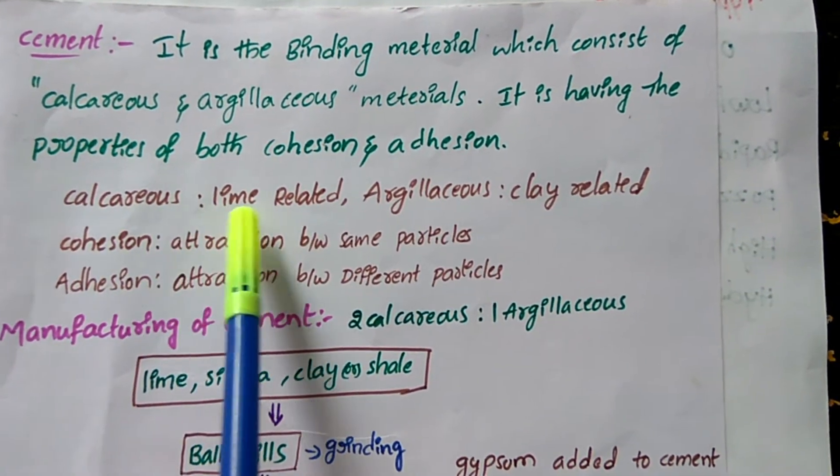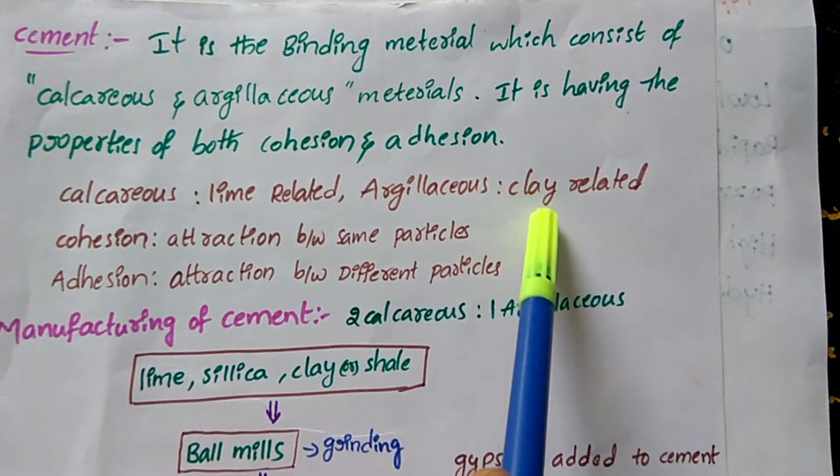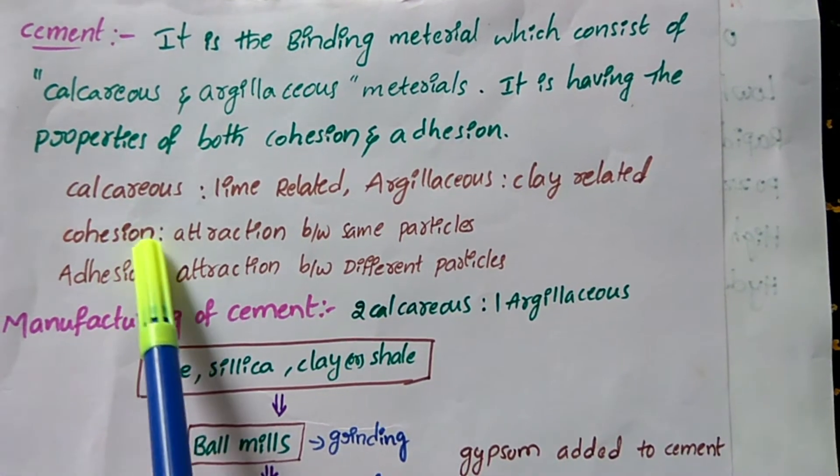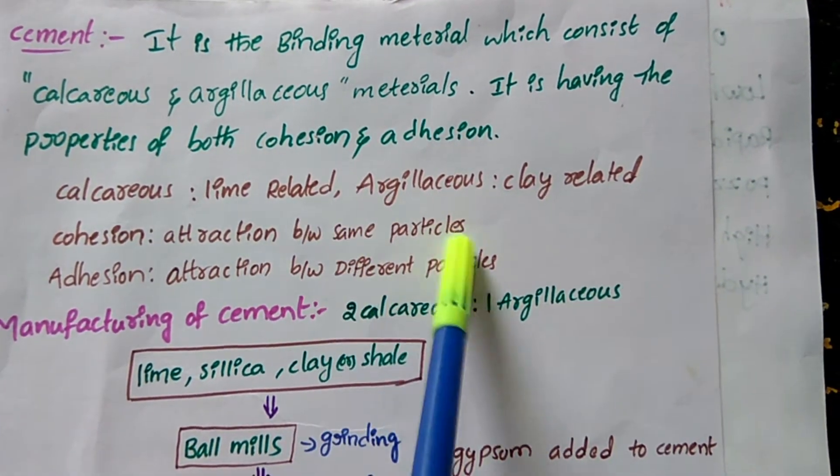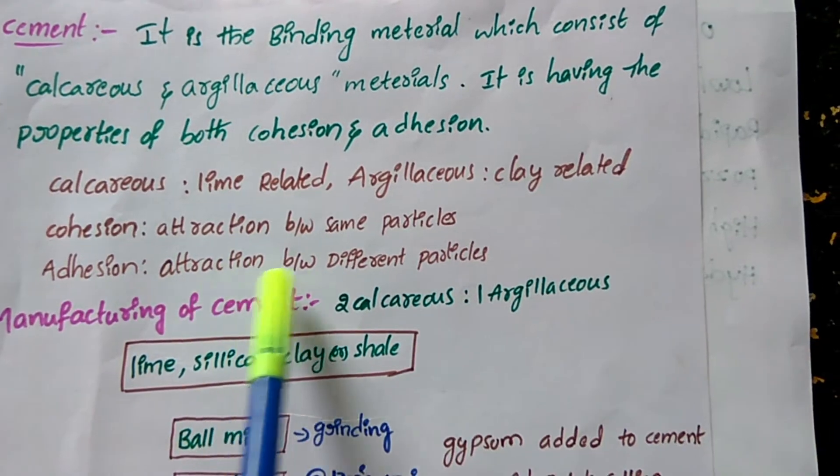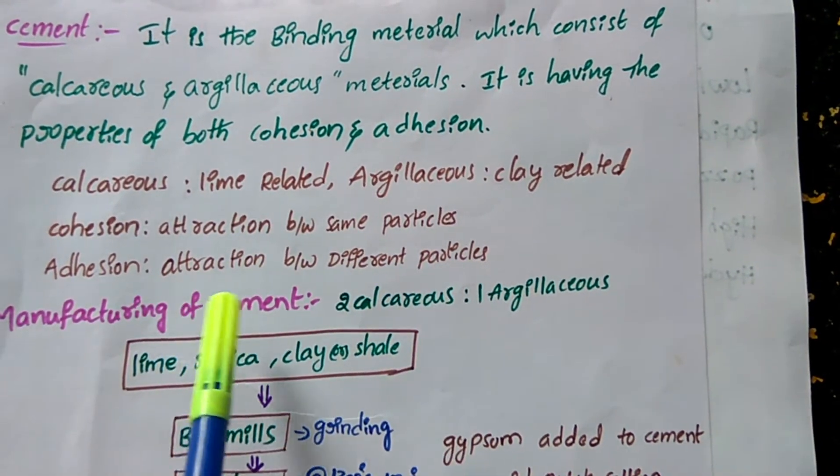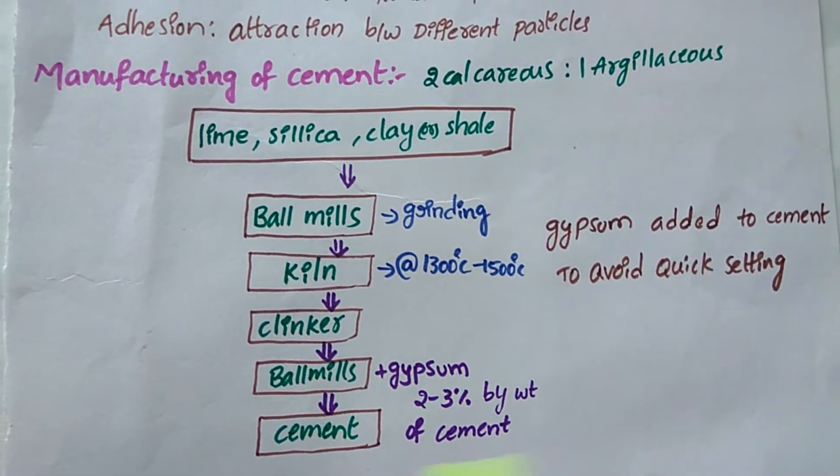adhesion. Calcareous means lime-related, argillaceous means clay-related. Cohesion is attraction between same particles. Adhesion is attraction between different particles.